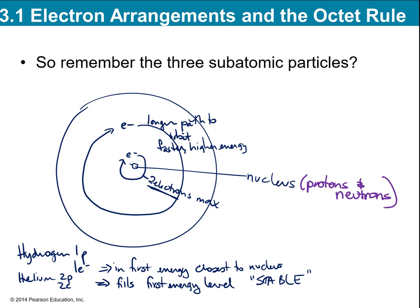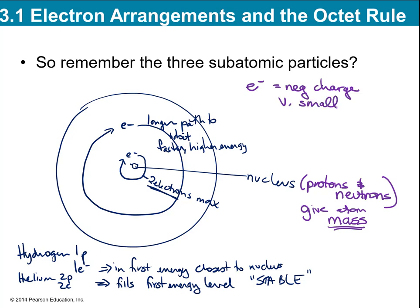Protons and neutrons give the atom mass — that is really their big job. The nucleus is the mass-dense part of the atom. Electrons, remember, are negatively charged. They're like 2,000 times smaller than a proton or a neutron. They're very small. I like to think of them almost like little particles of energy, and they're in constant motion.